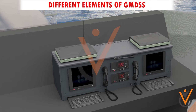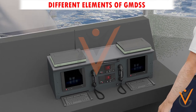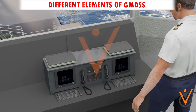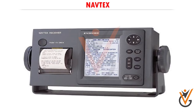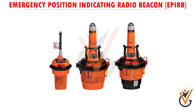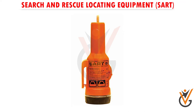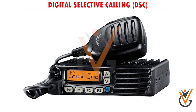The different elements of GMDSS are as follows: Inmarsat, Navtex, Emergency Position Indicating Radio Beacon (EPIRB), Search and Rescue Locating Equipment, and Digital Selective Calling (DSC).